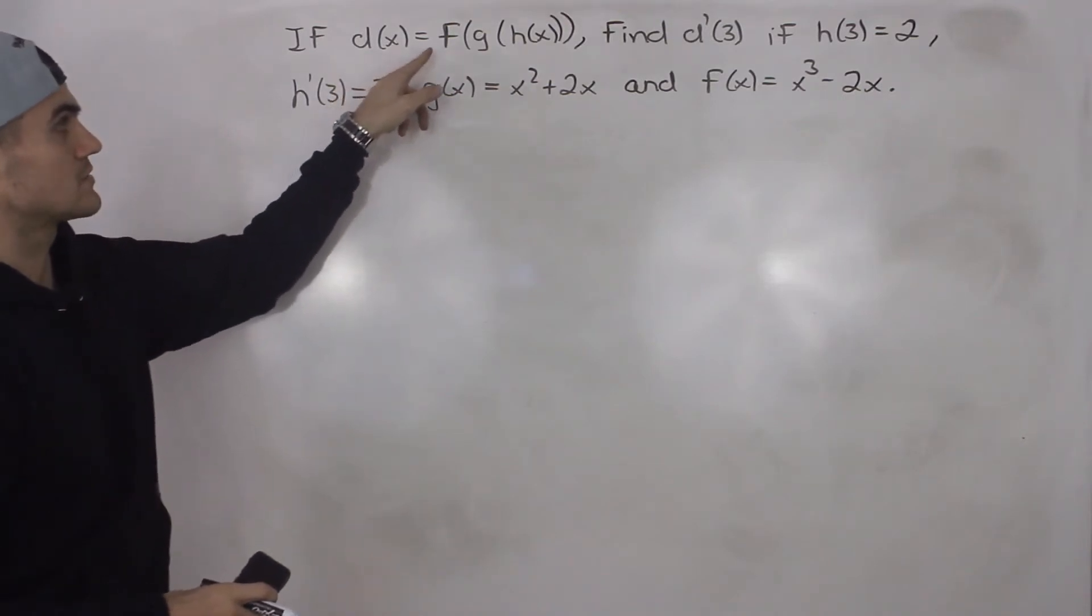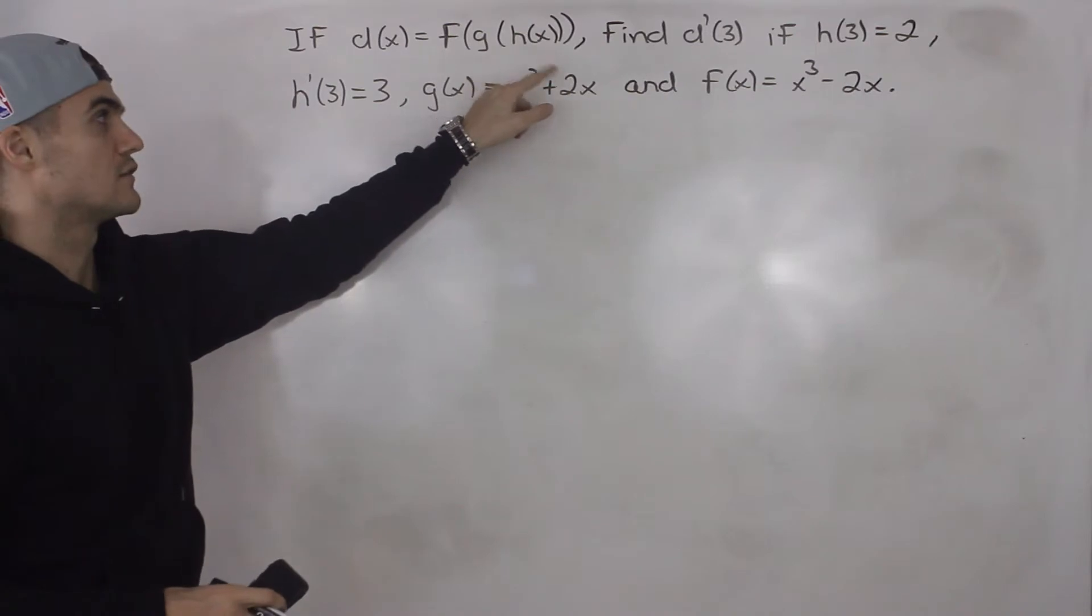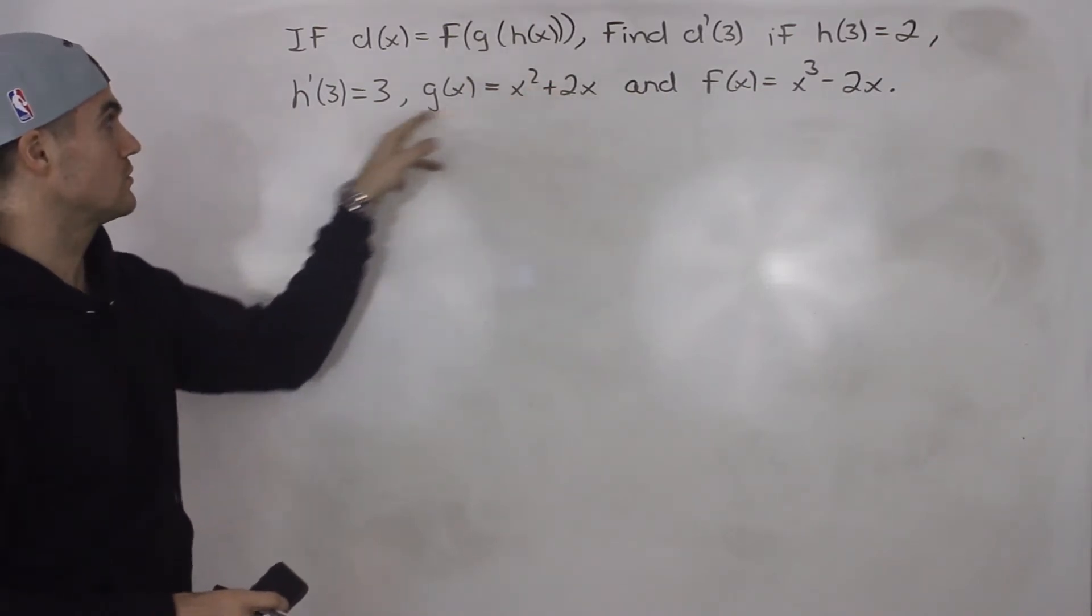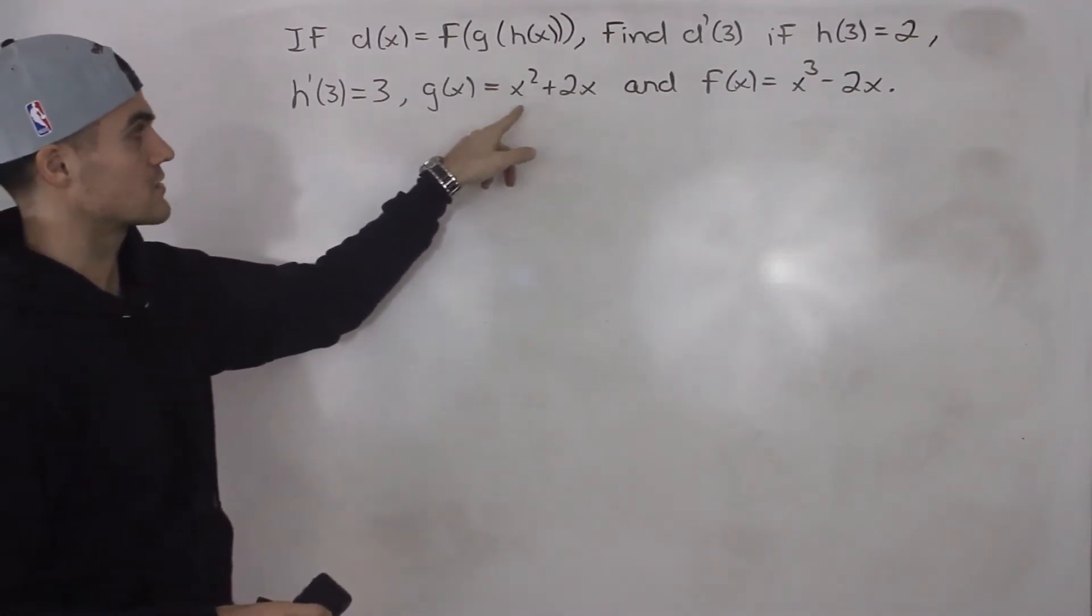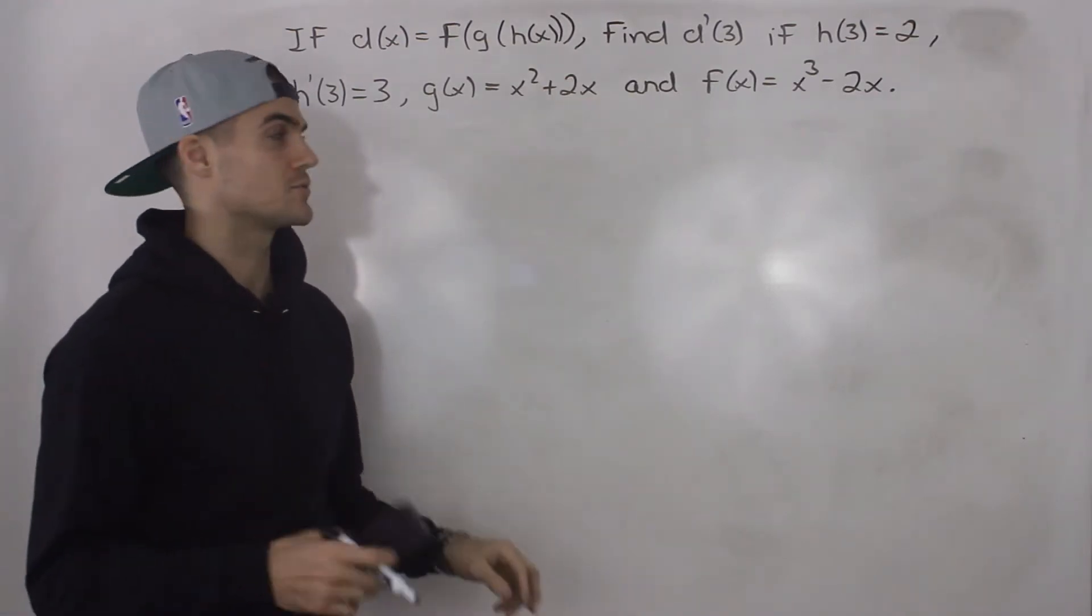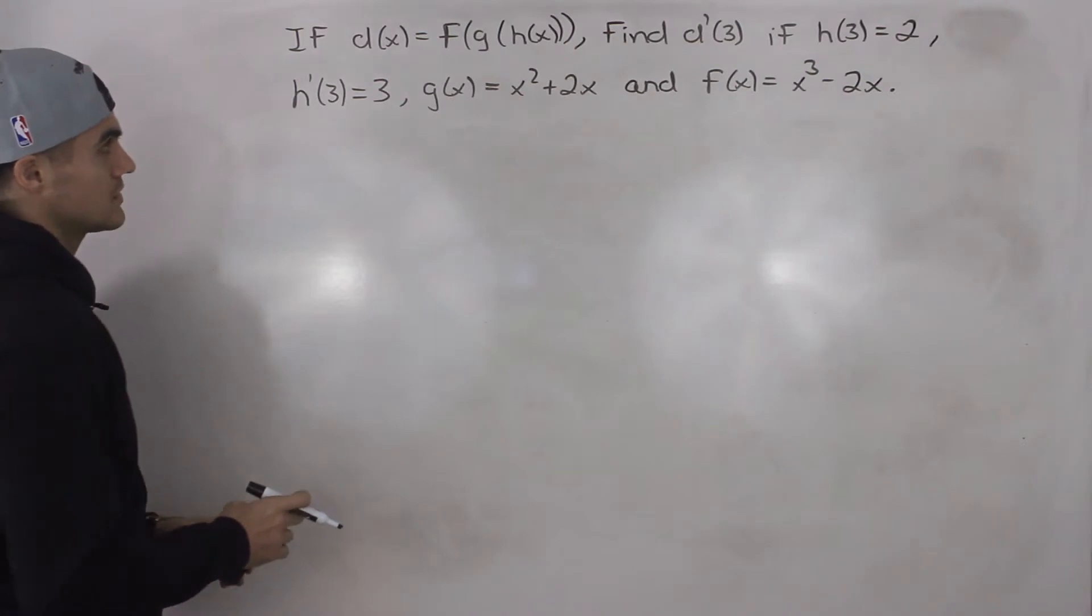So if d of x equals f of g of h of x, find d prime 3. If h(3) is equal to 2, h prime 3 equals 3, g of x equals x squared plus 2x, and f of x equals x cubed minus 2x. So lots going on in this question.